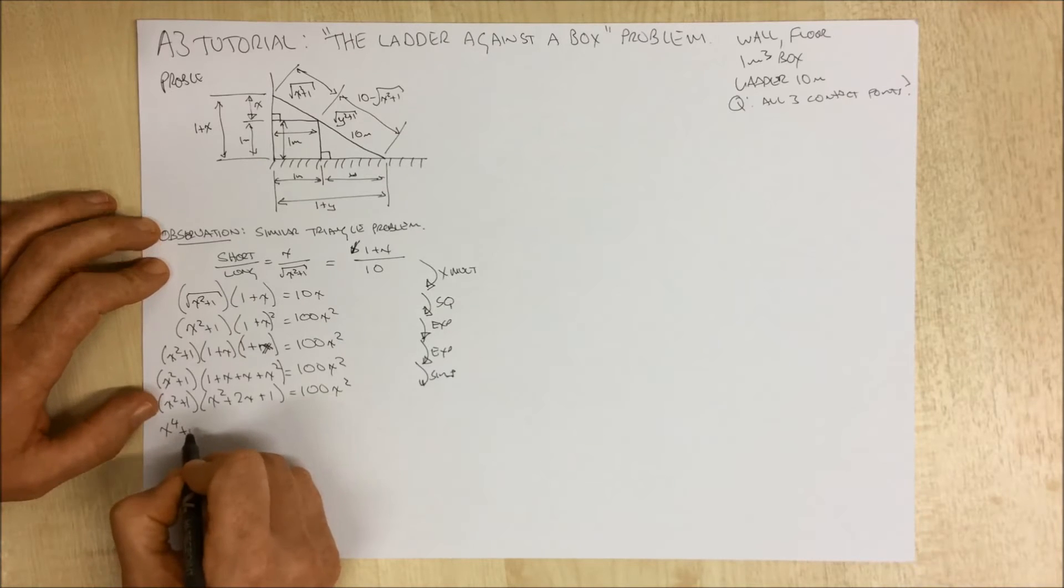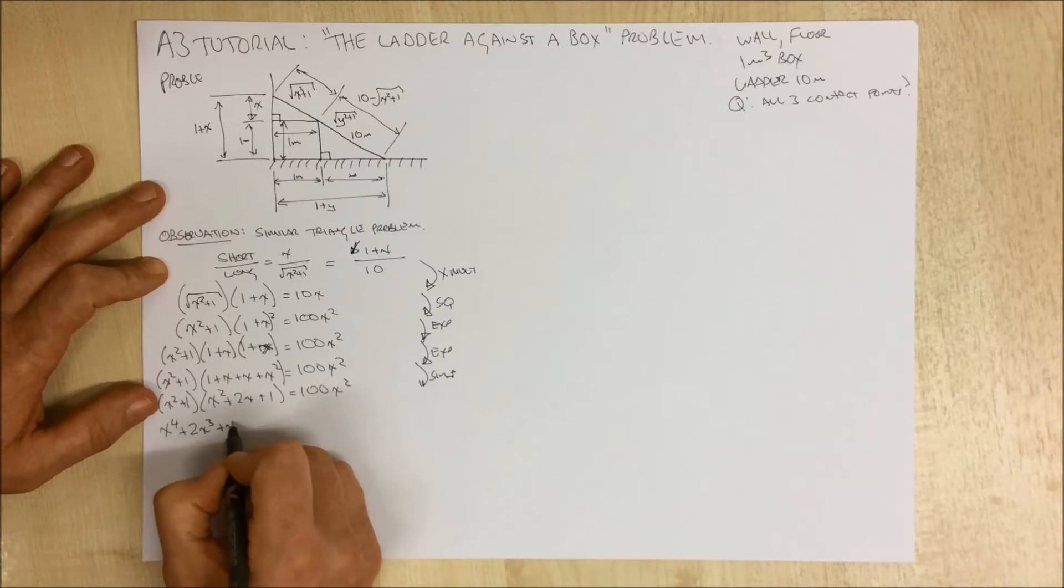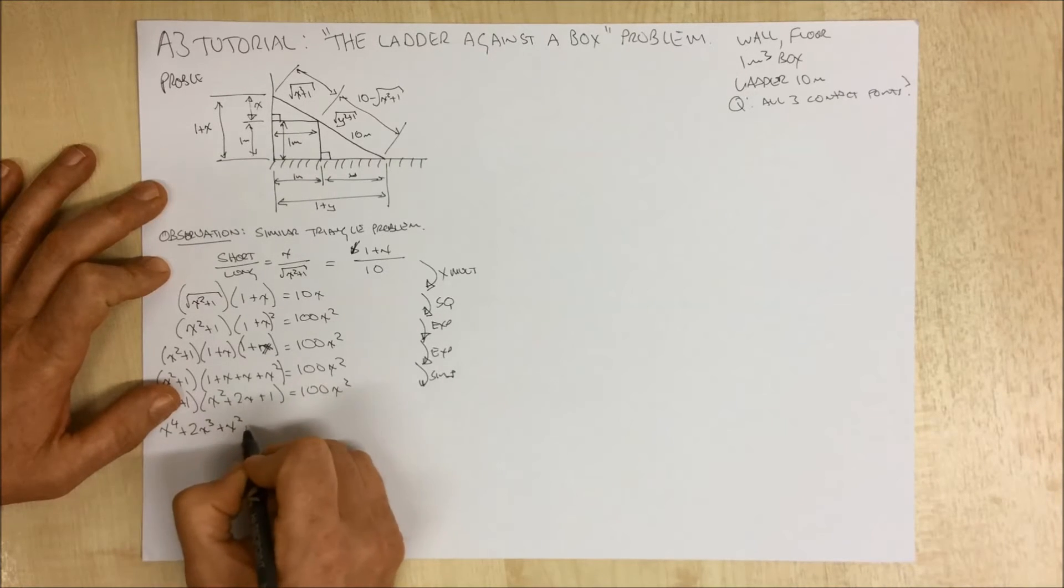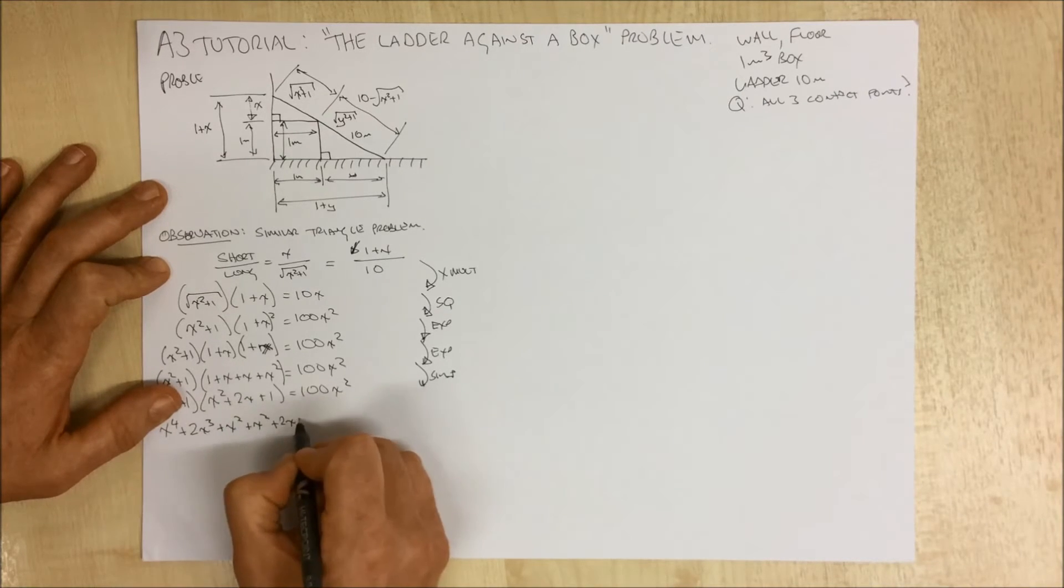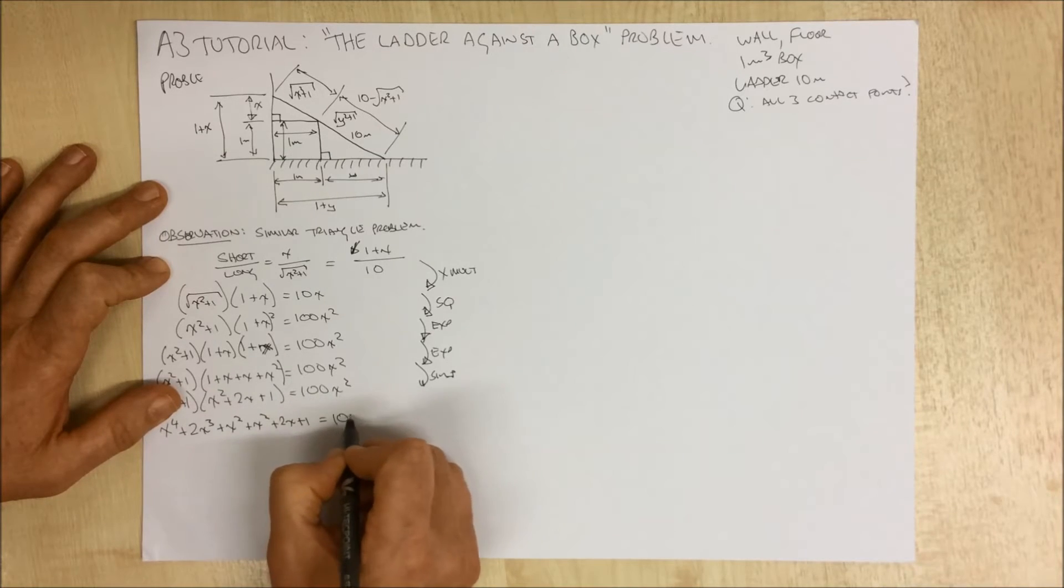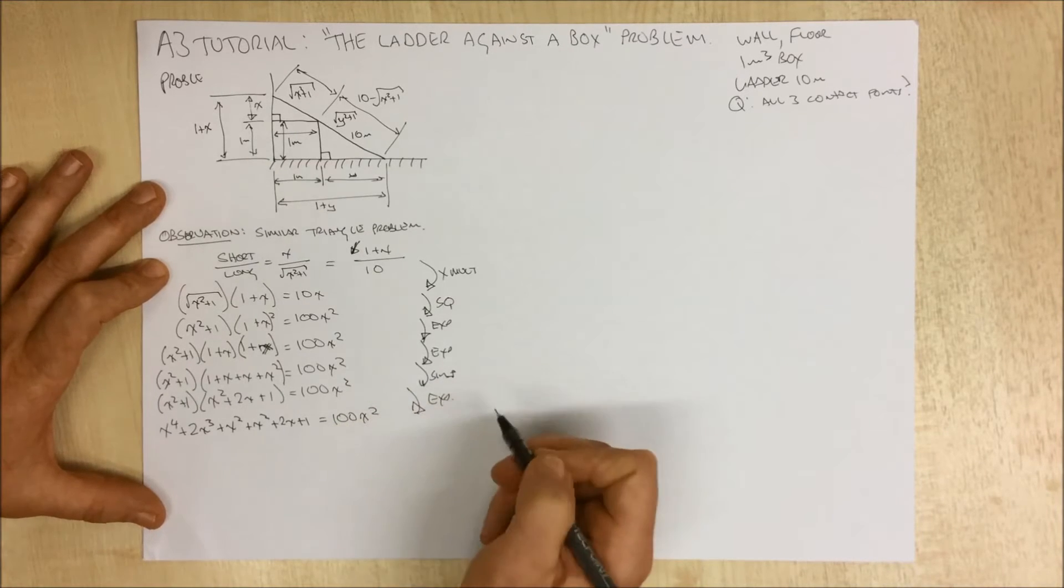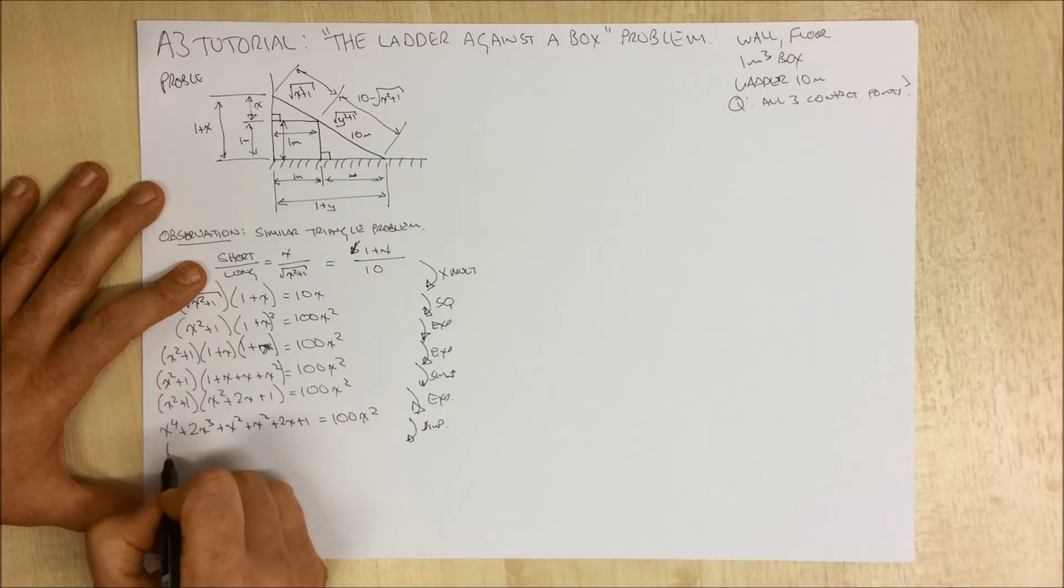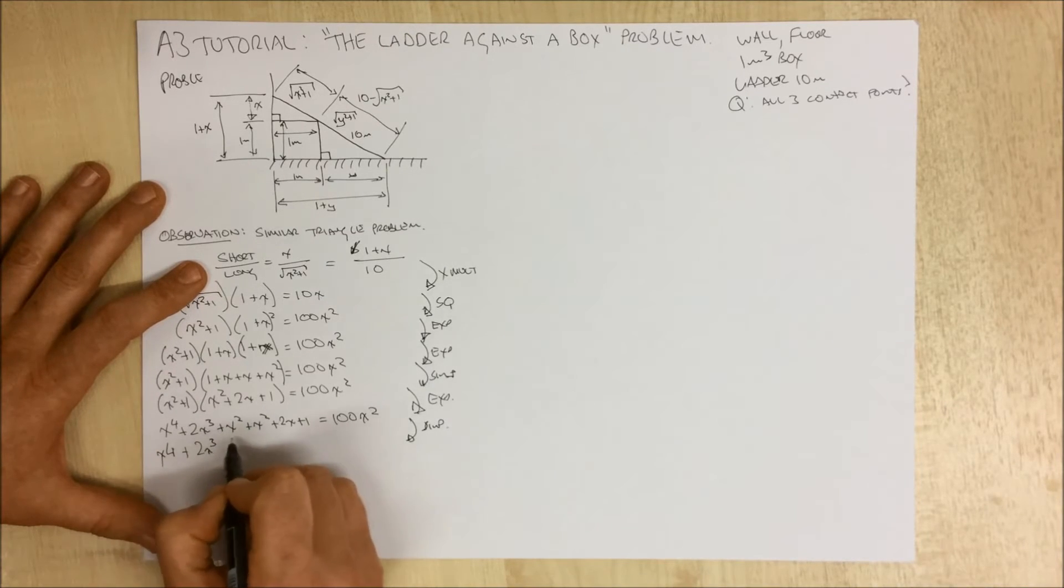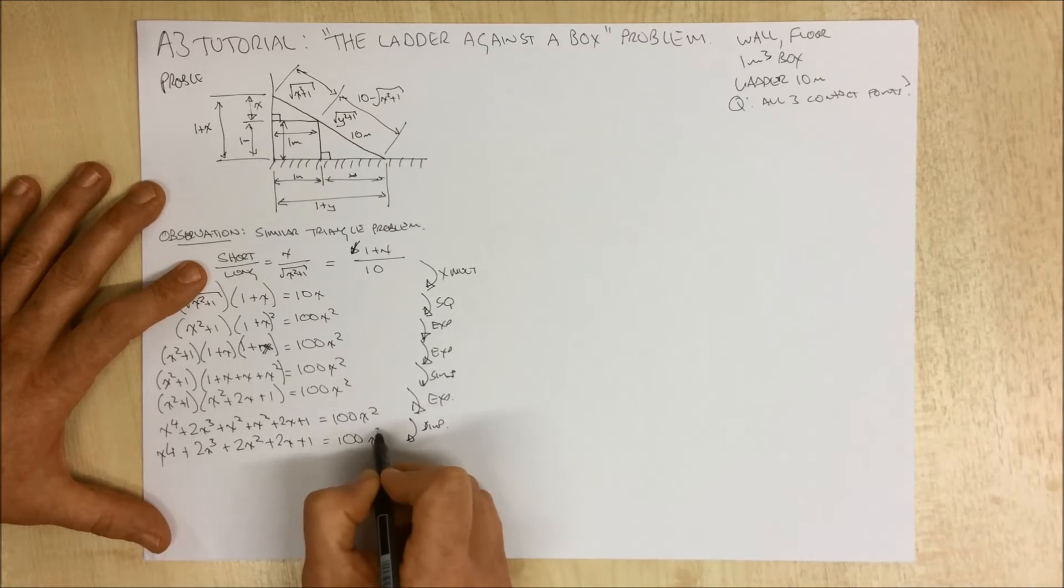x squared times 2x is 2x to the cube. x squared times 1 is x squared. 1 times x squared, 1 times 2x, 1 times 1. So that's what we did there. The next step we can again simplify.